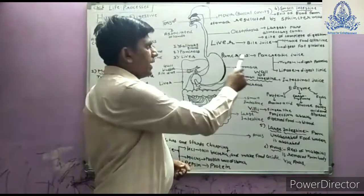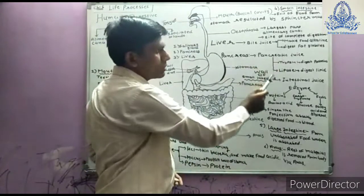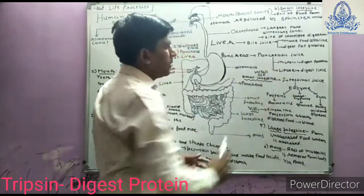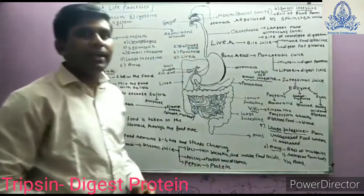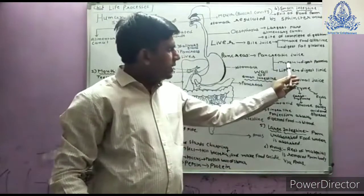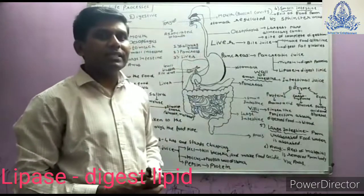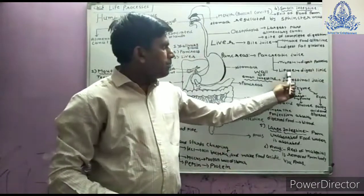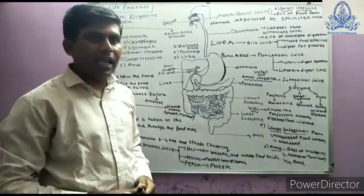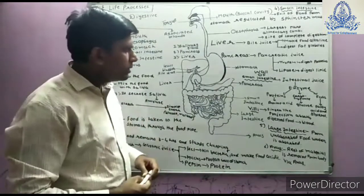The pancreas secretes pancreatic juice. Pancreatic juice contains two enzymes: trypsin and lipase. Trypsin digests protein, and lipase is the enzyme which helps in the digestion of lipids.